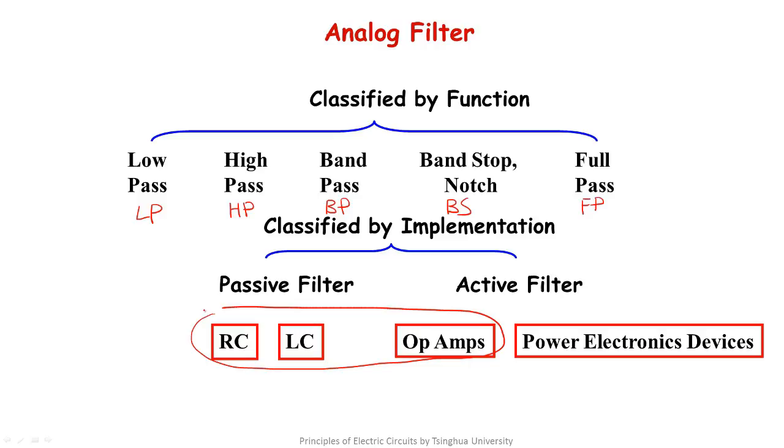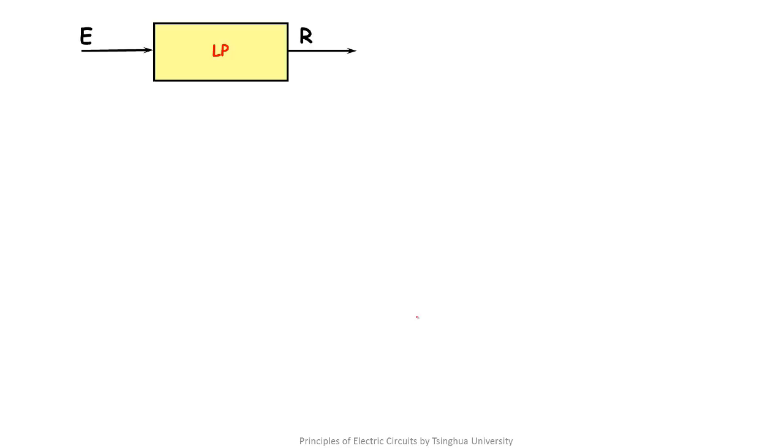In this course, we will discuss more the passive and active filters constituted by RC, LC, and operational amplifiers. Next, we will carefully discuss the previous five kinds of filters.